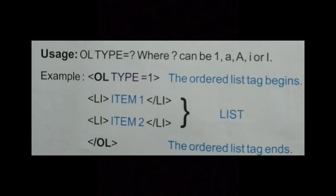Inside the ordered list, open angle bracket L1, close angle bracket, then Item 1, close the L1 tag. Again open L1 tag, Item number 2, close the L1 tag. Then close the OL tag — the ordered list tag ends. L1 means item number 1 and item number 2; these are the list items. The entire list should be enclosed between the OL and close OL tags. Each of the list items should begin with the L1 tag and end with the L1 tag.